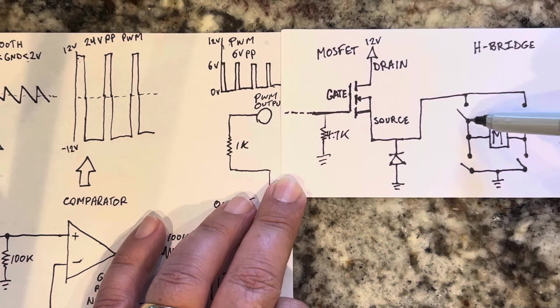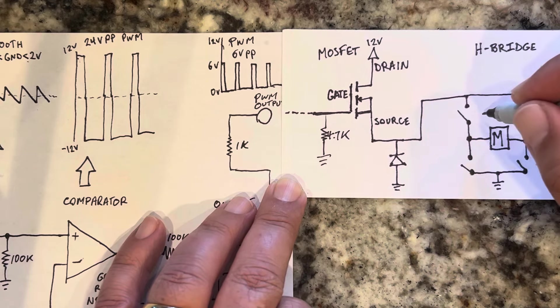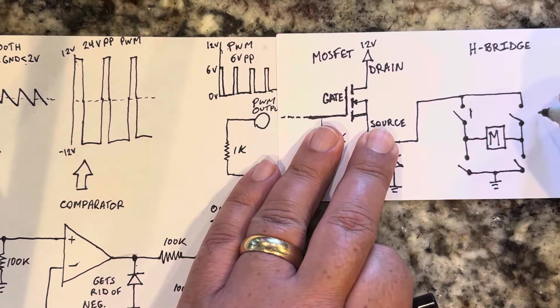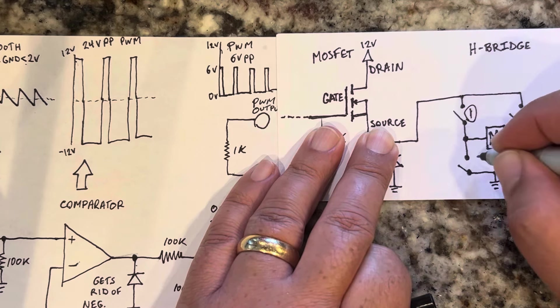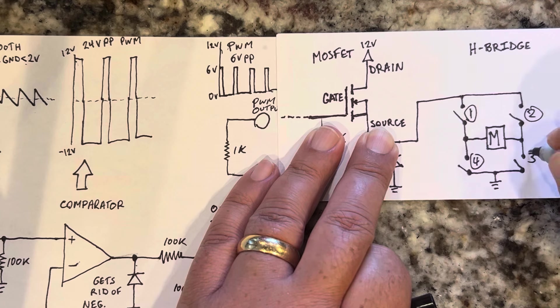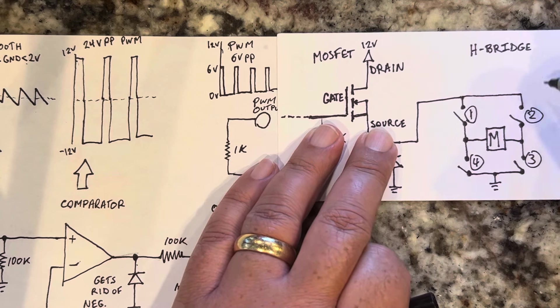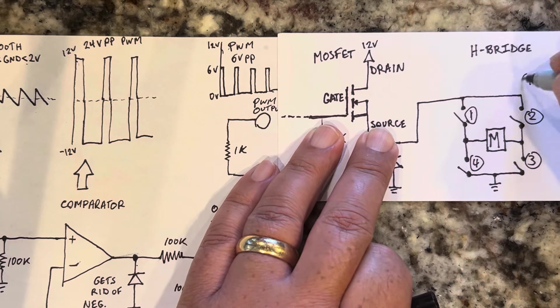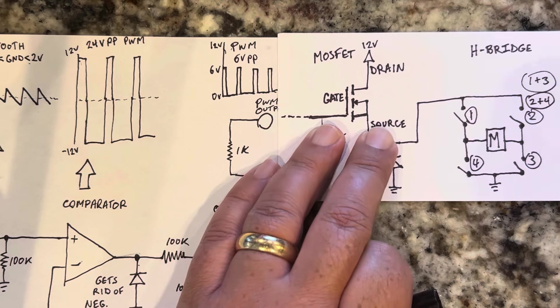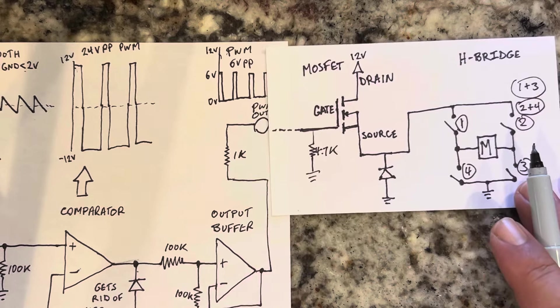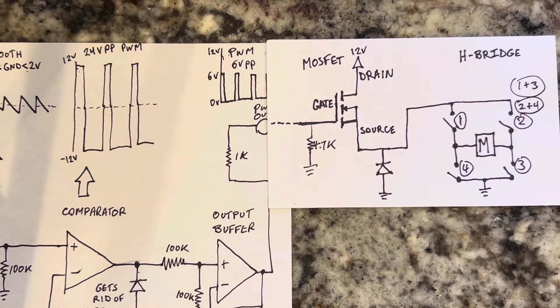So you just wire these two together. If I'm going to number them one, two, three, four, switch one and three, or switch two and four should be on at the same time. That is the essence of driving a motor with the PWM generator that we built in the previous video.